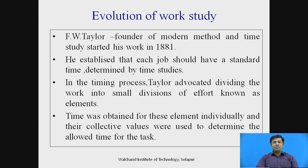In simple terms, this means: suppose we are going from one point to another point. The elemental times would include when we take a left turn, a right turn, or individually which task is performed — the starting time of the bike, the bike moving from the gate outward. These individual times are calculated and added to know the total task time, and these individual times are called elements.